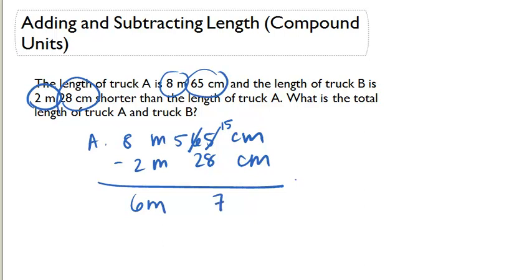15 minus 8 is 7, 5 minus 2 is 3. So we know that truck B is 6 meters and 37 centimeters.